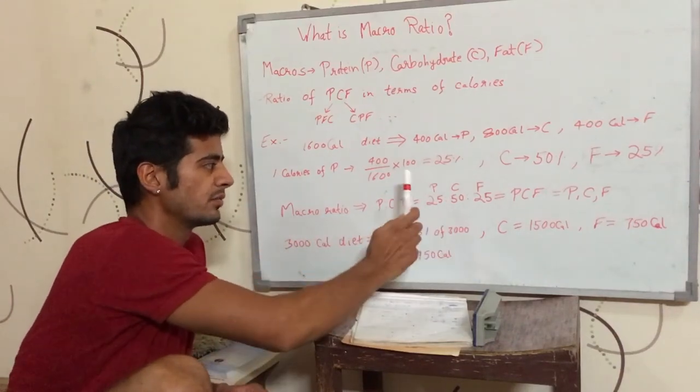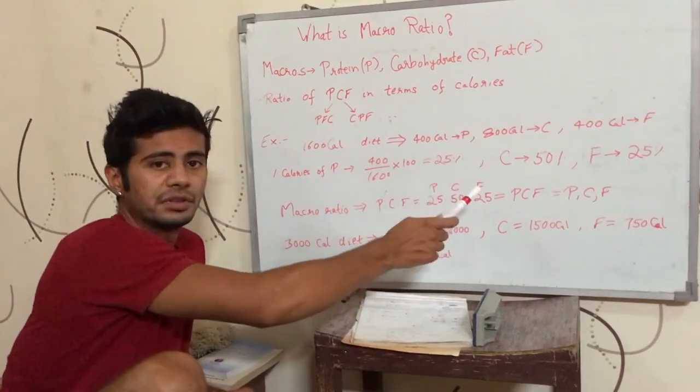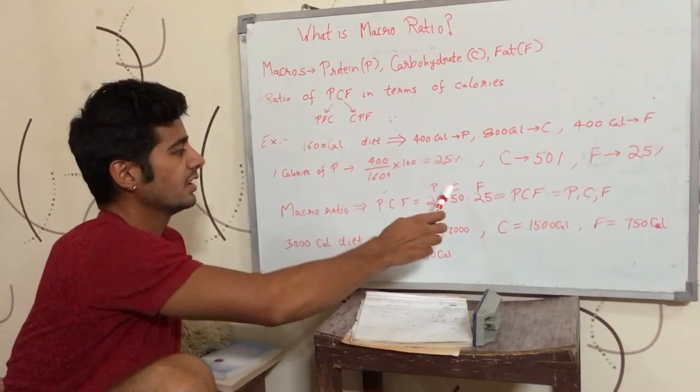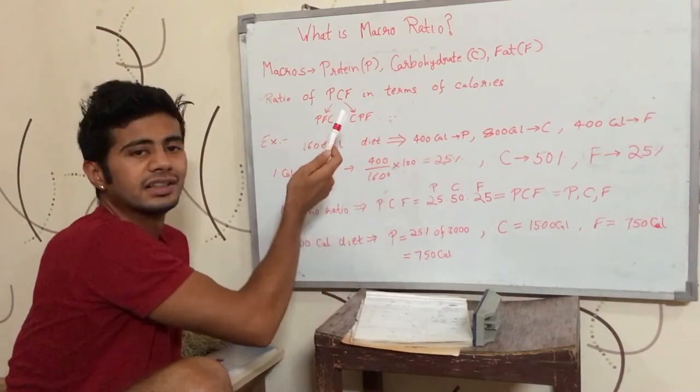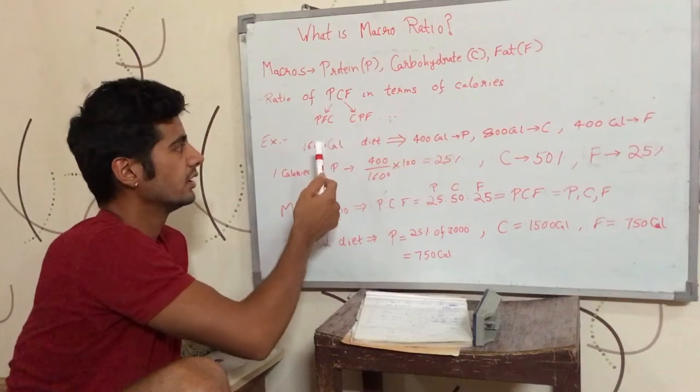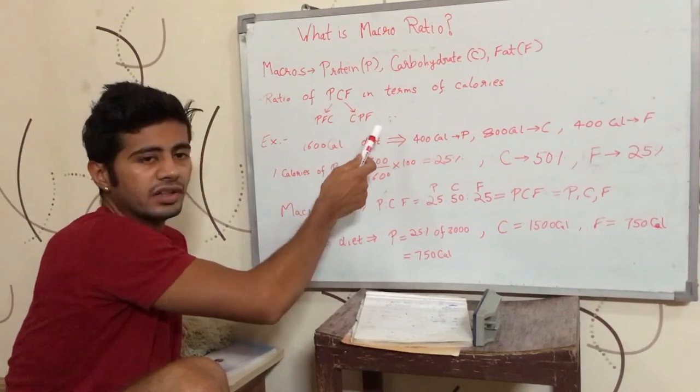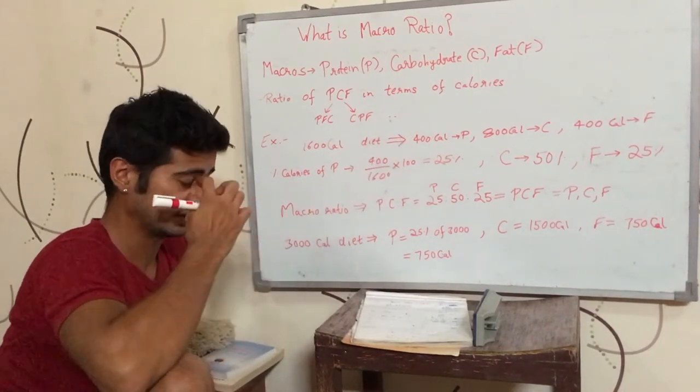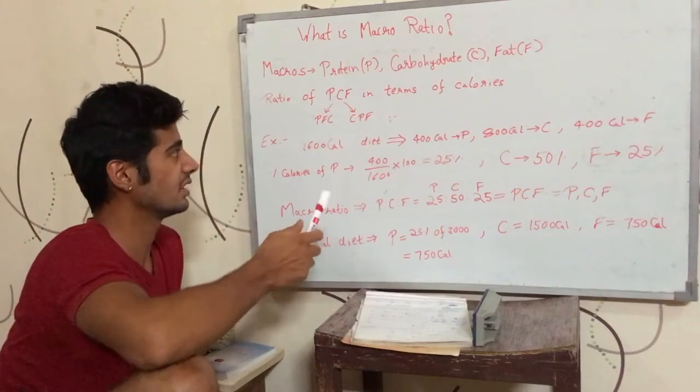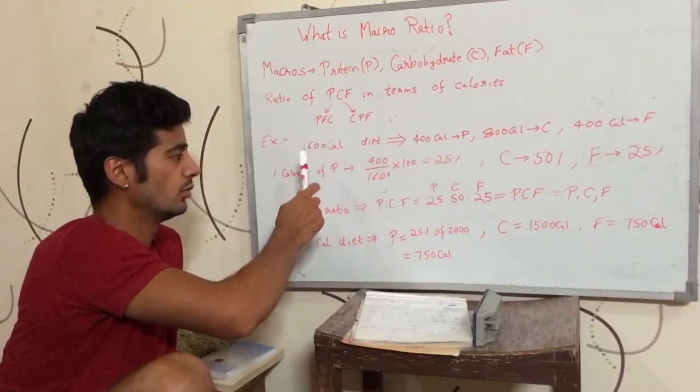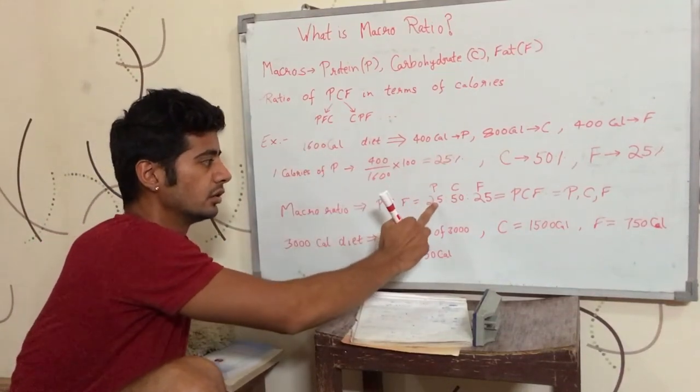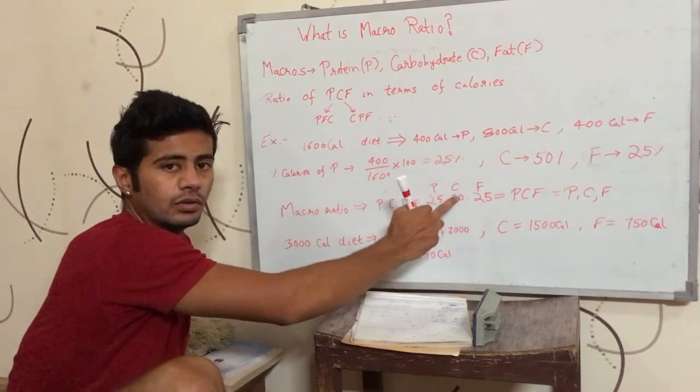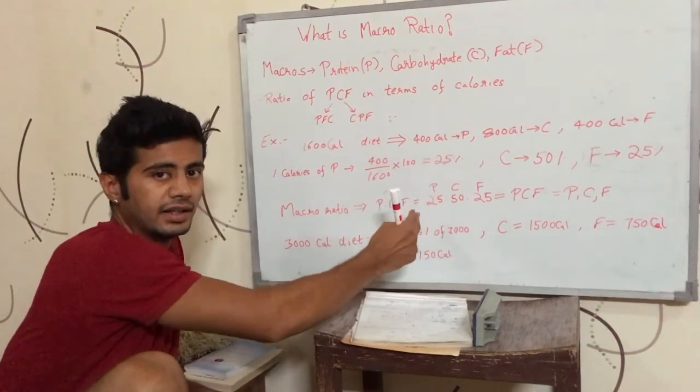It is 25-50-25% as protein, carb, and fat. You can call it PCF. If you want, you can also use PFC as protein, fat, carbohydrate, or you can write it as carbohydrate, protein, fat, or any other way. So if you use PFC as protein, fat, carbohydrate, it will be 25-25-50 since fat will be written first.